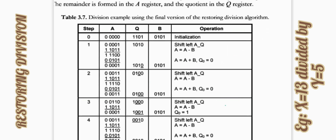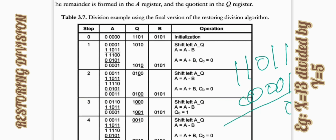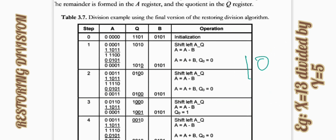After initialization, the next step is to shift A and Q left. After left shifting, the 1 from the end moves one position to the left. Now we perform A minus B. To compute A minus B, we use A plus (minus B), which is A plus the 2's complement of B. The 2's complement of 0101 is 1011, so adding A gives us a result. We check the MSB — this is the sign bit. If the sign bit is 1, the value is negative.